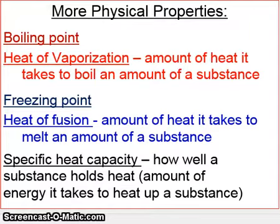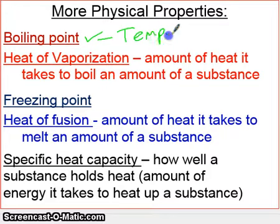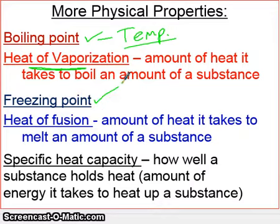Here are some other physical properties affected by intermolecular forces. Boiling point we've already mentioned. Heat of vaporization is the amount of heat it takes to completely vaporize a substance once it reaches its boiling point. Freezing point is similar to boiling point. Heat of fusion is the amount of heat it takes to melt a substance once it reaches its freezing point.